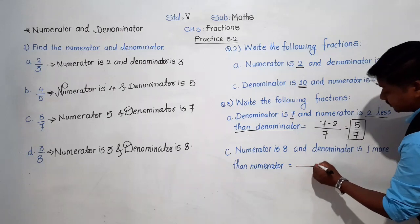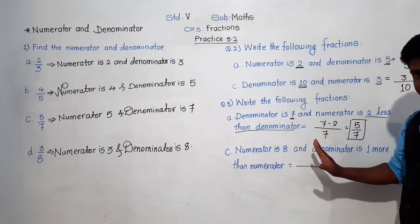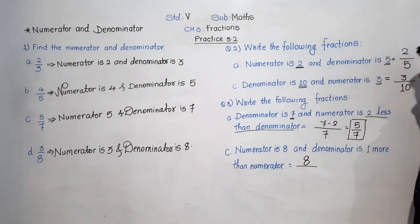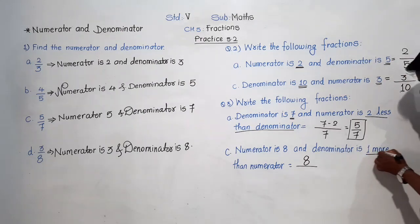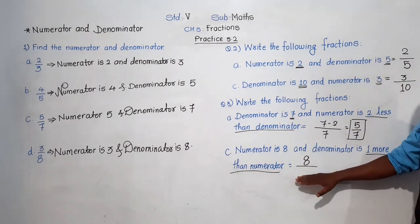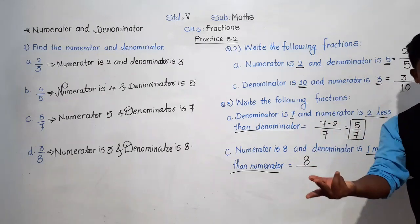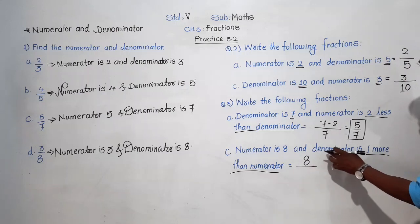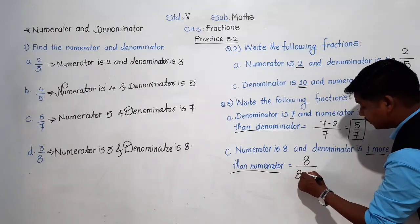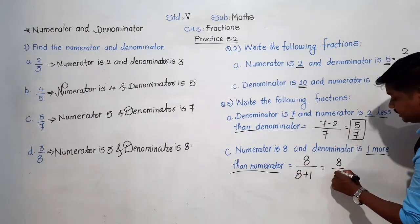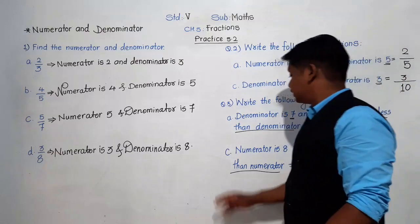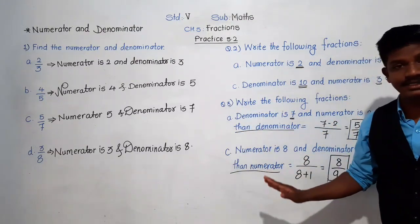Next example in question 3: numerator is 8 and denominator is one more than the numerator. 'One more' means addition, so add 1 to the numerator: 8 plus 1 equals 9. So the fraction is 8 upon 9. In question 3, the remaining examples D are to be tried by yourself as homework.